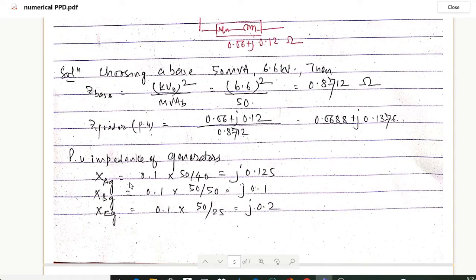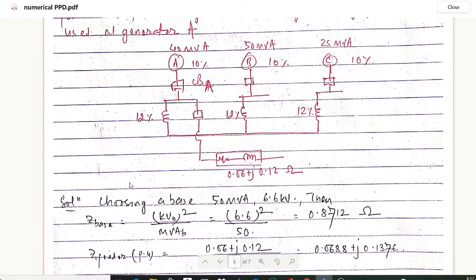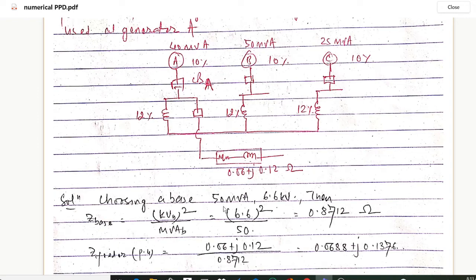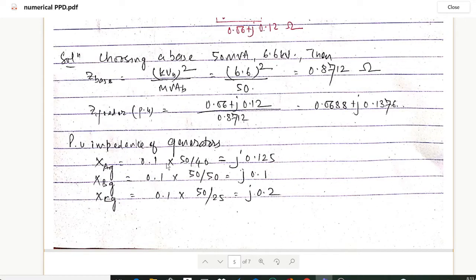For per unit impedance of the generators: the reactance of each generator is given as 10%. The old MVA for generator A is 40 MVA, for B is 50 MVA, and for C is 25 MVA. With new base MVA of 50 MVA, the per unit reactance of generator A is 0.1 × (50/40) = 0.125. For generator B, it is 0.1 × (50/50) = 0.1.